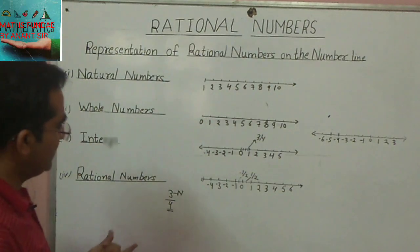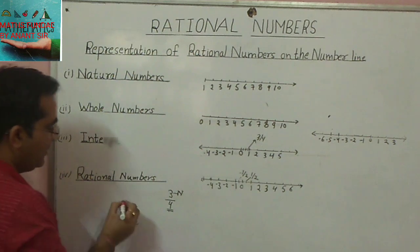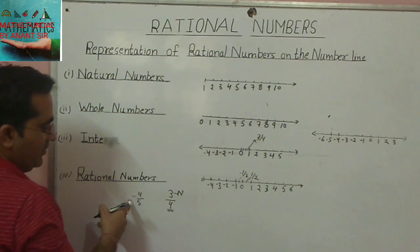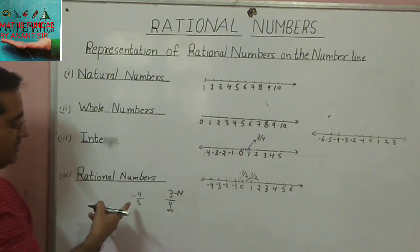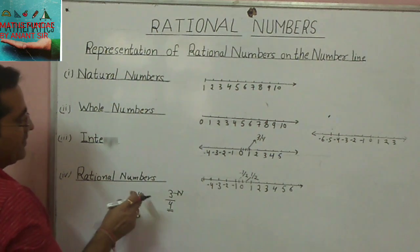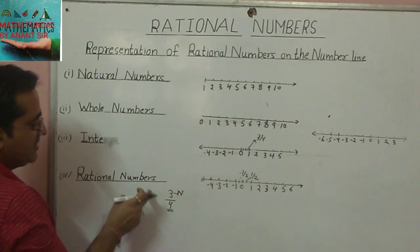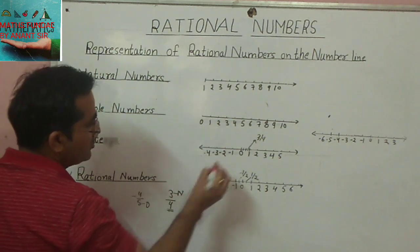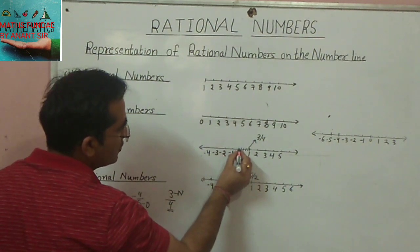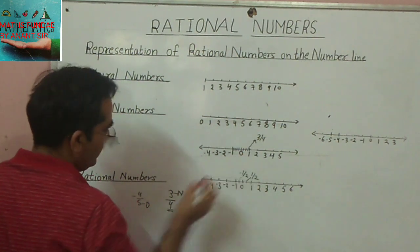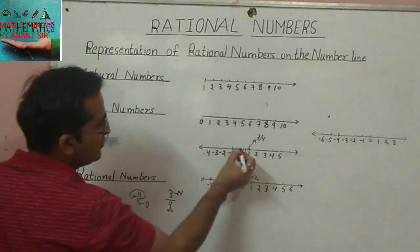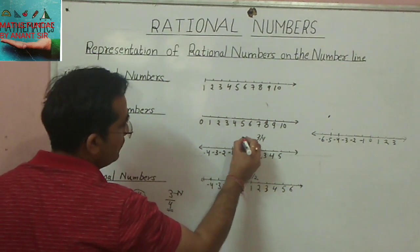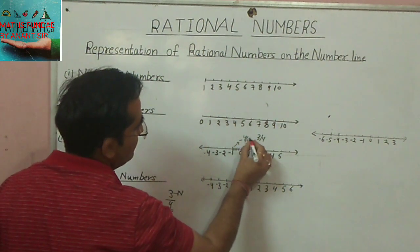Likewise, for a negative rational number like minus 4 upon 5: it is negative, so smaller than 0, and since 4 upon 5 is less than 1, it lies between 0 and minus 1. The denominator is 5, so divide 0 and minus 1 into 5 equal parts. The numerator is minus 4, so move 4 parts to the left of 0. That point represents minus 4 upon 5.